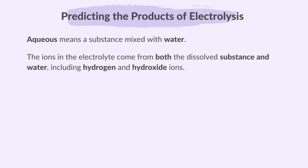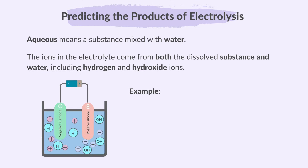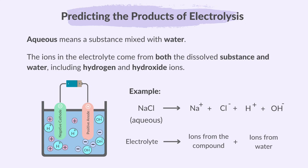For example, for electrolysis of aqueous sodium chloride, NaCl, the ionization would be represented as follows. The ions in the electrolyte will be Na+, Cl-, H+, and OH-. So the electrolyte will contain ions from the compound plus ions from water.